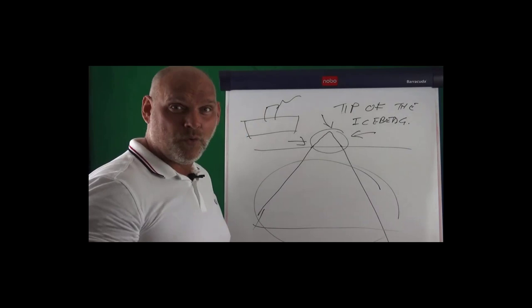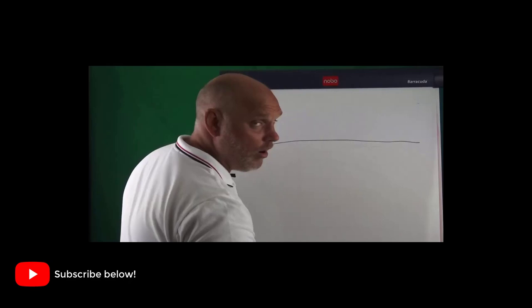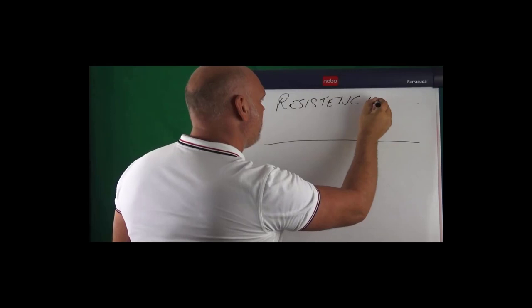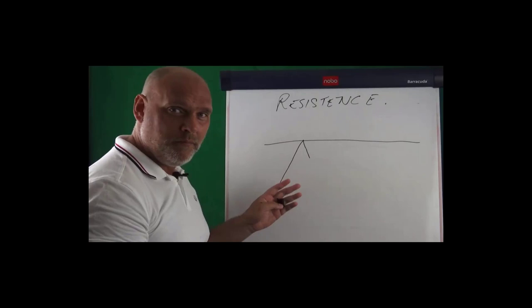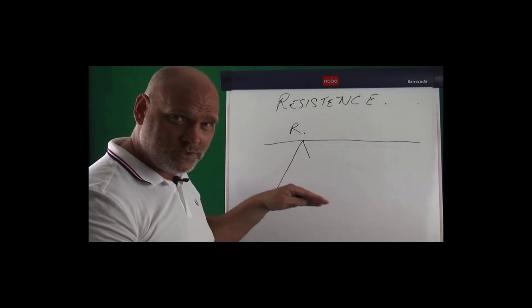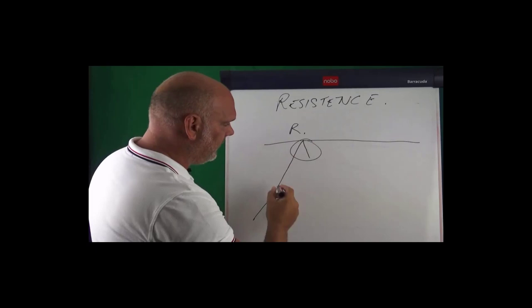So we're going to discuss a level of resistance. The key is that the level wants to have been touched several times. Now when you have some price action that comes up to a level and turns away, many people call that resistance. But when price turns away from the level the first time, that's not necessarily true — because what that could actually be is simply profit taking.